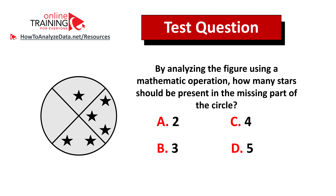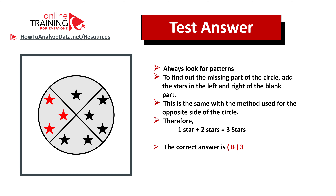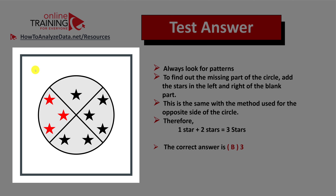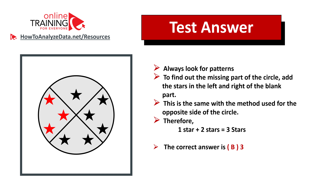Did you figure out the answer? Let's continue to see if we can come up with the solution together. As usual, to answer any type of question, look for patterns. The pattern here is symmetricity. If you draw a line in the middle of the circle from top to bottom, you will see that you need an answer that would be symmetrical. There are multiple ways to solve this — we take the star from the left of the blank part and add the number of stars from the right: one plus two equals three. You can also use subtraction — if you figure out how, please post it in the comment section.